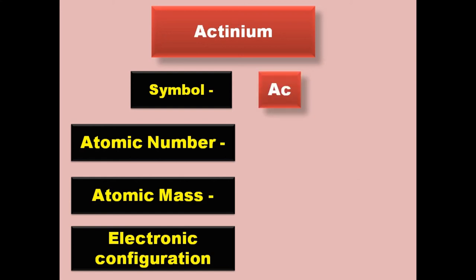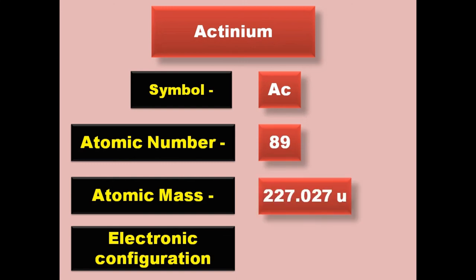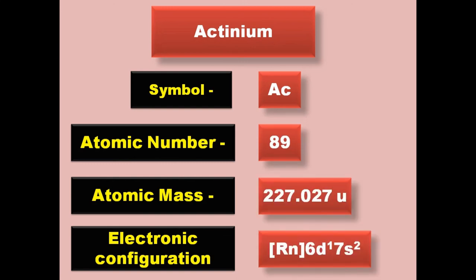Actinium has symbol Ac, atomic number 89, atomic mass 227.027, electronic configuration [Rn] 6d1 7s2. Actinium is an actinide and exists in solid form at room temperature.